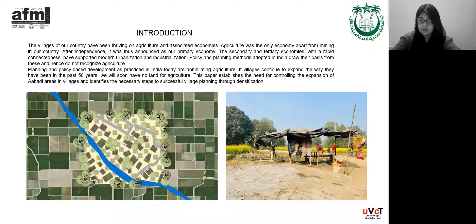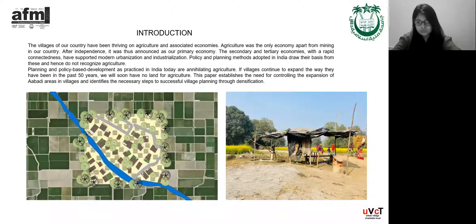If villages continue to expand the way they have been in the past 50 years, we will soon have no land for agriculture. Therefore, it is the need of the hour to control the expansion of these abadi areas in villages so that agricultural land can also be conserved. My paper talks about the same, identifying the necessary steps, the reasons behind this, and how this can be resolved.